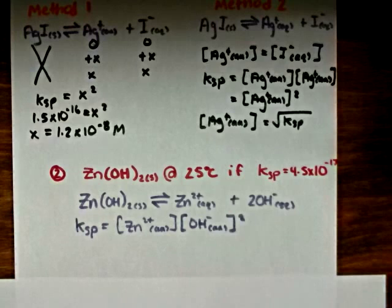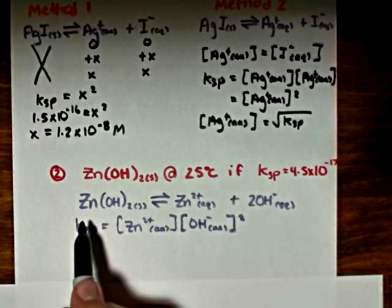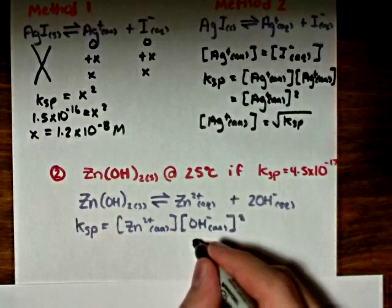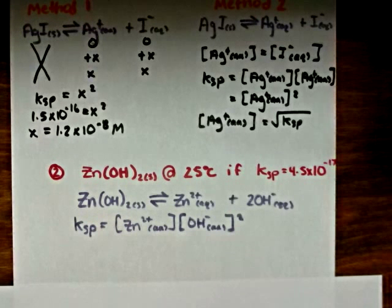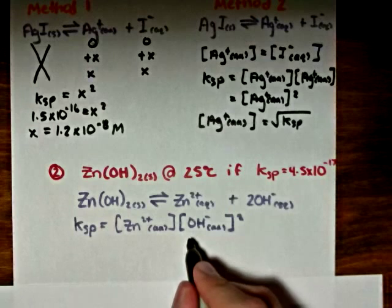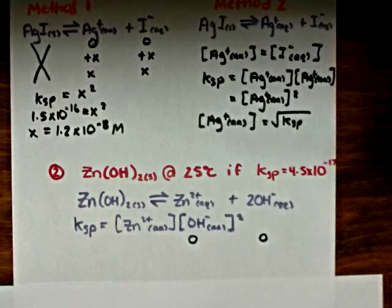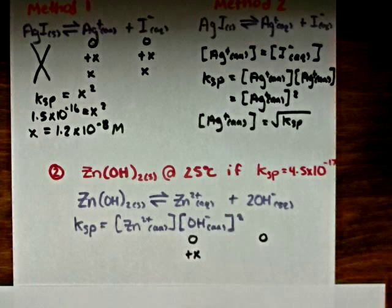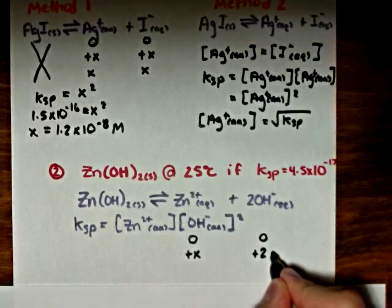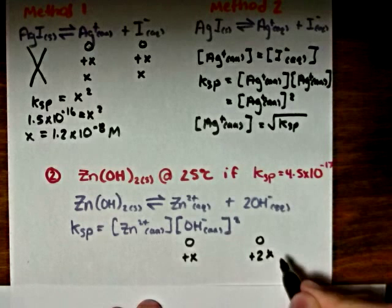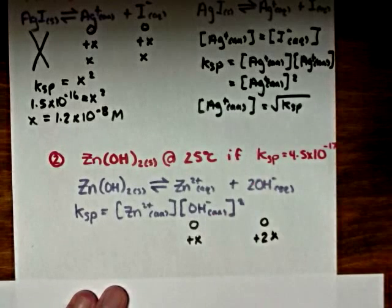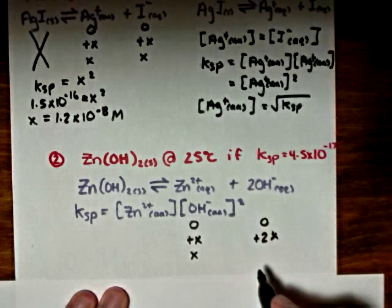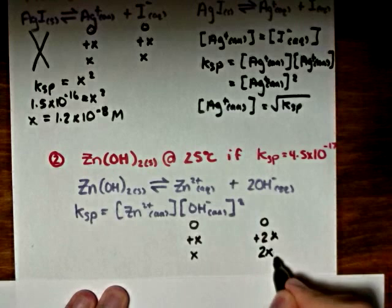We'll use another ICE table to solve this problem. Initially, once this zinc hydroxide is placed in solution, we'll have a concentration of zero for each of the two ions. We'll have a change of plus X for the zinc ions and a change of plus 2X for the hydroxide ions, so that at equilibrium we have a concentration of X for the zinc ions and a concentration of 2X for the hydroxide ions.